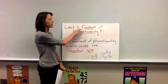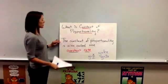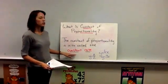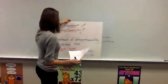So this is basically saying that proportionality is going to stay the same. So the definition is the constant of proportionality is also called the constant rate. Okay? And those are a lot of big words, so let's talk about what the constant rate is.